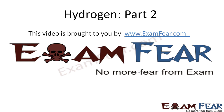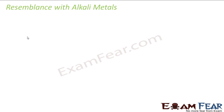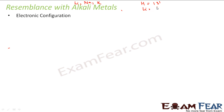This video on hydrogen part 2 is brought to you by examfear.com. Let's talk about the first resemblance with alkali metals: electronic configuration. For hydrogen the electronic configuration is 1s1. For lithium it is [He] 2s1, for sodium it is [Ne] 3s1. So the pattern is the same — they all have one extra electron beyond a stable configuration.